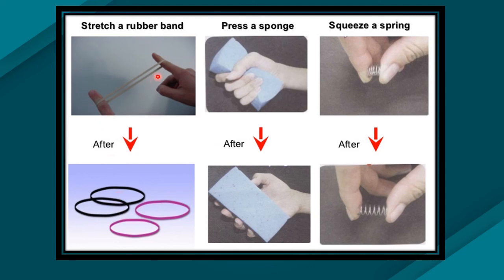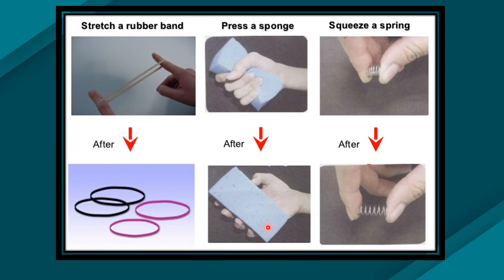Let us take a few examples of force changing shape. First, stretching a rubber band — when you stretch it and then stop, it regains its original shape due to elasticity. This shows change of shape by applying force. Second, pressing a sponge — it changes shape under force, and regains its shape when force is removed. Third, squeezing a spring — it changes shape under force and returns to its original shape when force is removed. These three examples show that applying force on an object can change its shape.